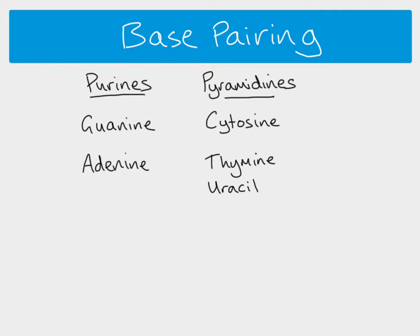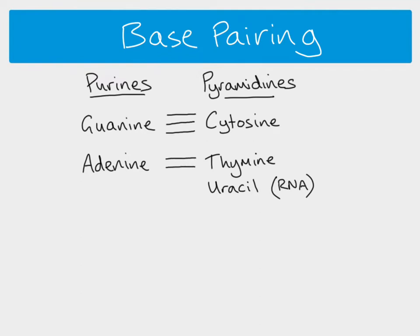In base pairing, a purine will always pair with a pyrimidine because of the structure of the molecule. Guanine and cytosine always pair up — they are complementary to one another. Adenine and thymine will always pair up. In RNA, instead of adenine and thymine, you have adenine and uracil pairing up. In terms of bonds, they're all hydrogen bonds. Guanine and cytosine have three hydrogen bonds between them, while adenine and thymine, or adenine and uracil, only make two hydrogen bonds.